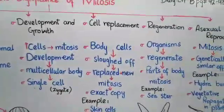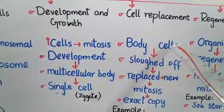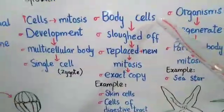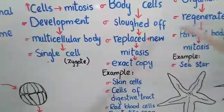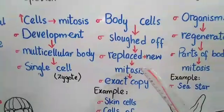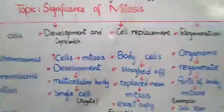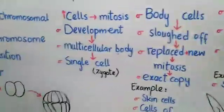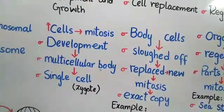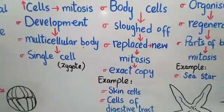The third significance is cell replacement. In some parts of the body, body cells are constantly sloughed off and removed, and they are replaced by new ones through the process of mitosis. New cells are made by mitosis as exact copies to replace the sloughed-off cells, filling the place where the old cells were lost.